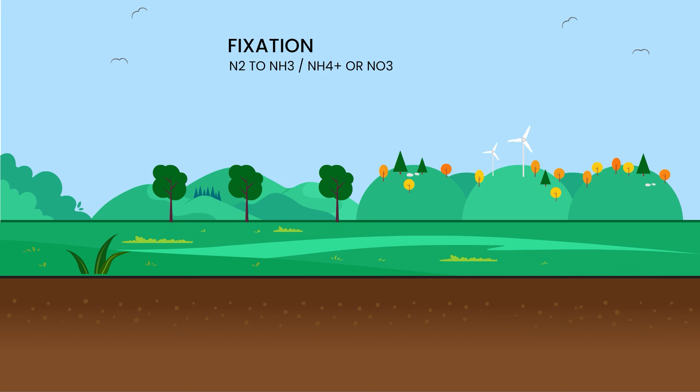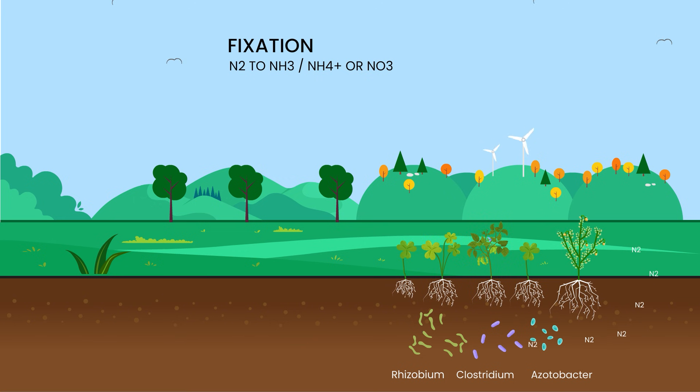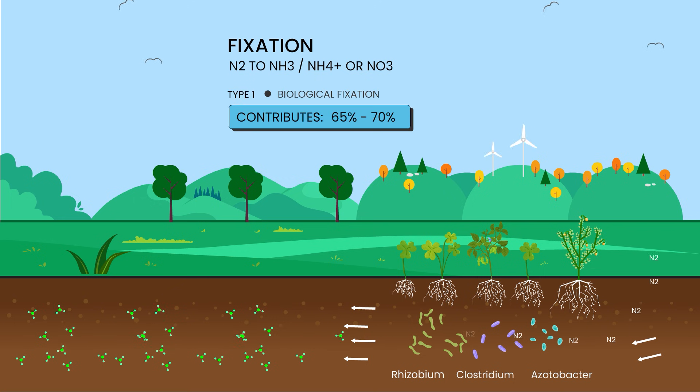It all starts with nitrogen fixation. Certain bacteria, like azotobacter and clostridium, found in the soil, as well as symbiotic bacteria like rhizobium, living on the roots of plants like beans, peas, and clover, take nitrogen from the air and change it into ammonia or nitrates. This process makes nitrogen available for plants. This is known as biological nitrogen fixation, and it contributes about 65 to 70% of nitrogen fixation globally.